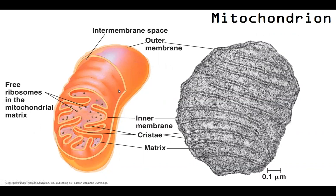While the outer membrane is relatively smooth, the inner membrane has a lot of folded-in areas known collectively as cristae. You can see what these really look like in the microscopy.